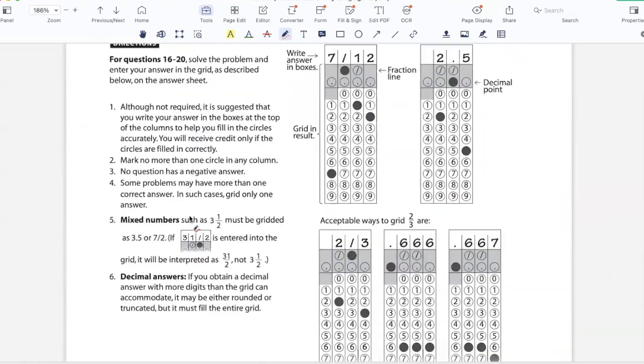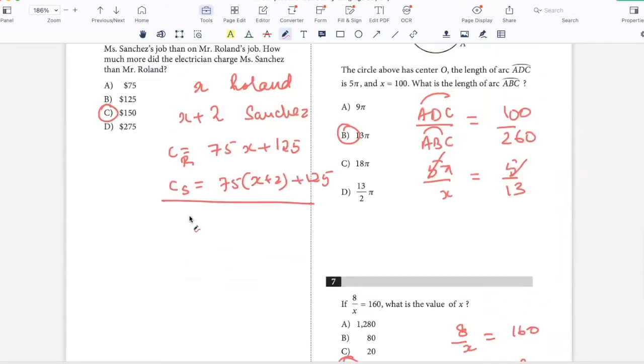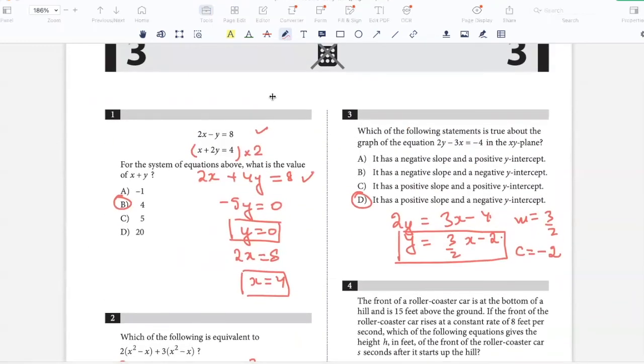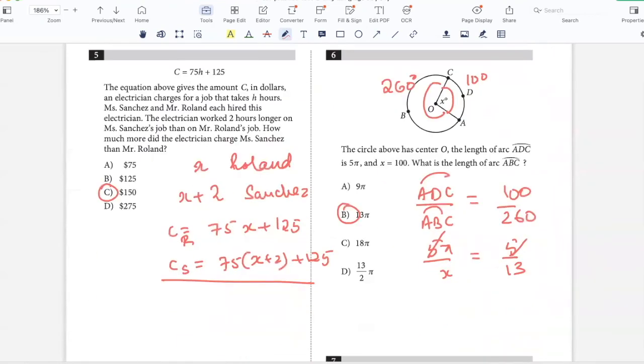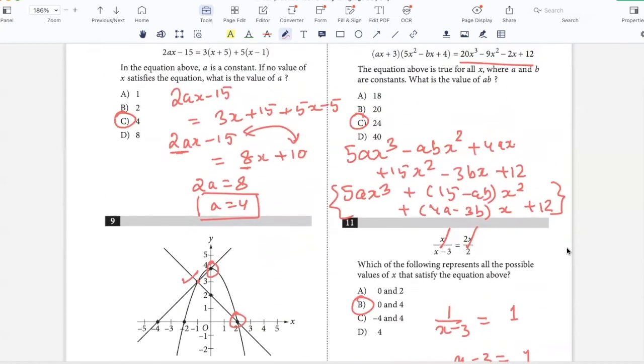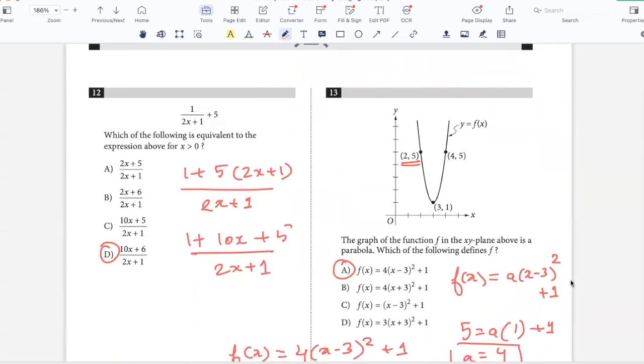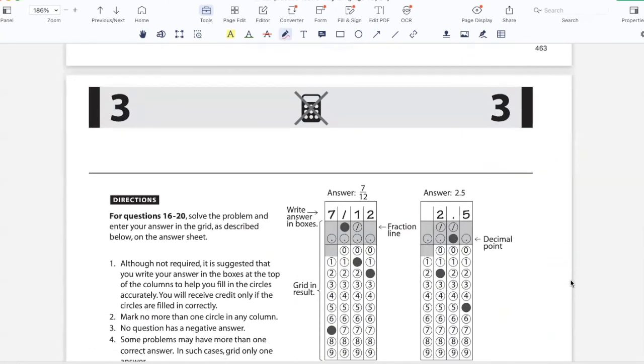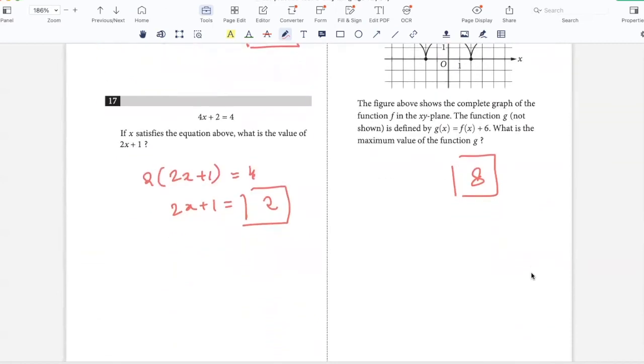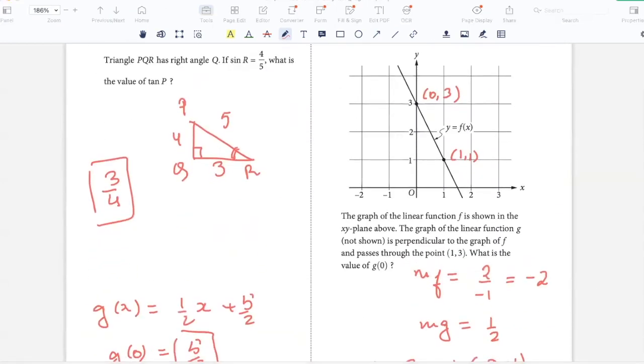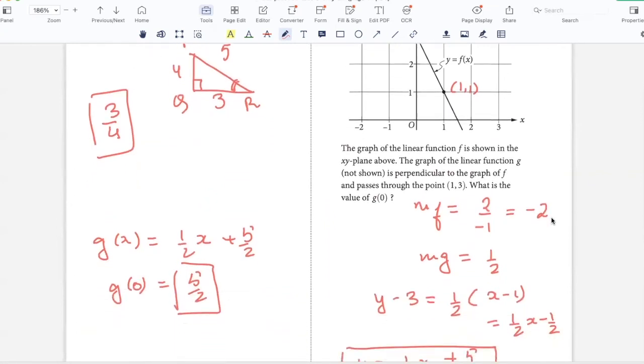That was the no-calc section. Let's check this. Question 1: B, A, D, A, C. 6th: B, D, C, B, C. 11: B, D, A, B. 13: B, D, A, B, B. 16: 360, 2, 8. 19 and 20: 3 by 4, 5 by 2. Great, so we got all correct.